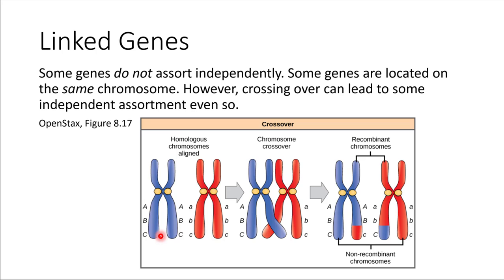There is one exception, having to do with crossing over during meiosis. If some of those genes get swapped around, the final result after meiosis includes recombinant chromosomes. So capital C did not get inherited with capital B because they split apart — making it seem like these genes inherit independently. But in other cases, like A and B, they did not get separated and are still physically on the same chromosome, so they remain linked.